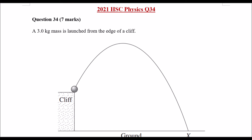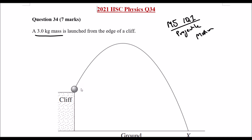Welcome back to the classroom, my name is Mr Wong and today we'll be looking at another past paper question in physics. This is for Module 5 Inquiry Question 1, all about projectile motion. This is from the 2021 paper, question 34. We have a 3 kilogram mass that is launched from a cliff, goes up, reaches peak height,